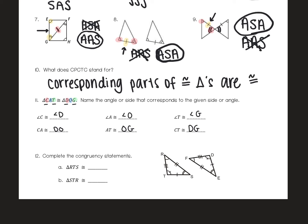For number 12, complete the congruency statement by following the pattern. Side RT has three marks and TS has one mark, so following that same pattern — three marks then one — it would be triangle FDE. For the second congruency statement, they name it STR: ST is the one-marked side, TR is the three-marked side, so following that pattern you would name it triangle EDF.